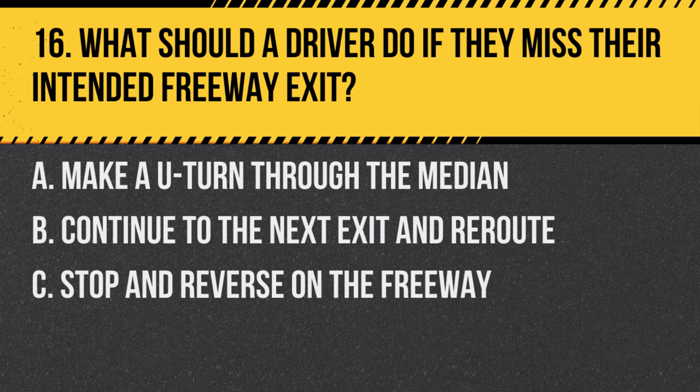Question 16. What should a driver do if they miss their intended freeway exit? A. Make a U-turn through the median. B. Continue to the next exit and reroute. C. Stop and reverse on the freeway. Answer: B. Continue to the next exit and reroute. If you miss your exit, it's safest to proceed to the next one rather than attempt dangerous maneuvers.